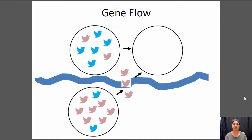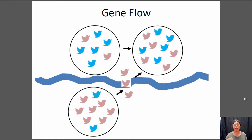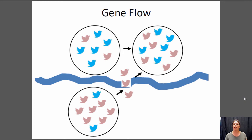Here we have some Twitter birds separated by a river. These two populations are relatively isolated — the population on the north side has a greater frequency of the blue allele, and the population on the south side has a greater frequency of the pink allele. Now some individuals move from the south population to the north, and they happen to be all pink. That's going to increase the frequency of the pink allele in the northern population. Is that evolution? Evolution is the change in allele frequency in a population over time — and yes, we have changed the allele frequency. Therefore, evolution has occurred.